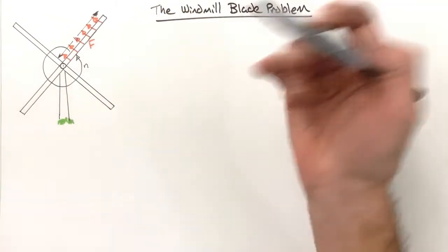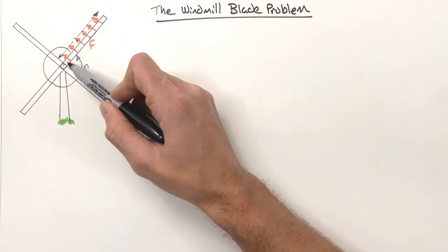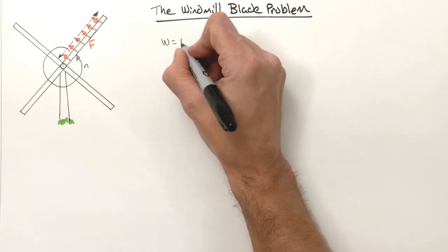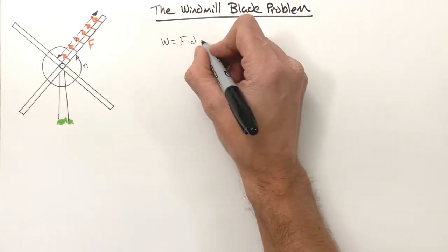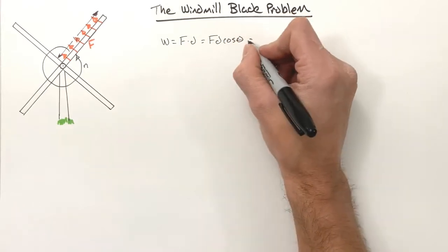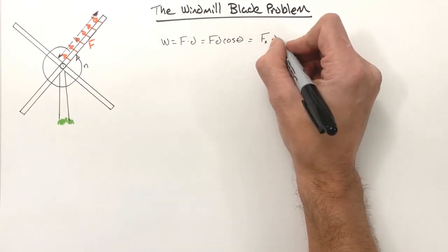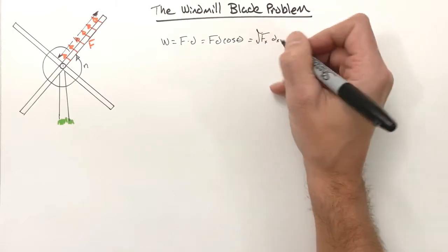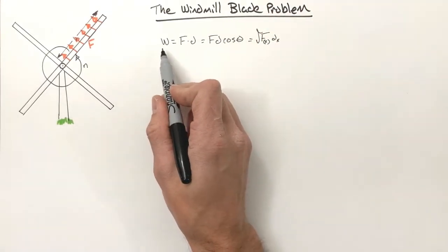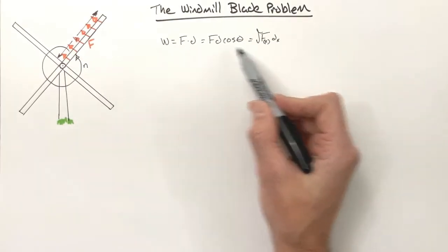We know work is given by F dot d, which is F·d·cosθ, or we can write it as the integral of F(x) dx. Somehow we're going to have to fit what's going on in this problem into this equation.